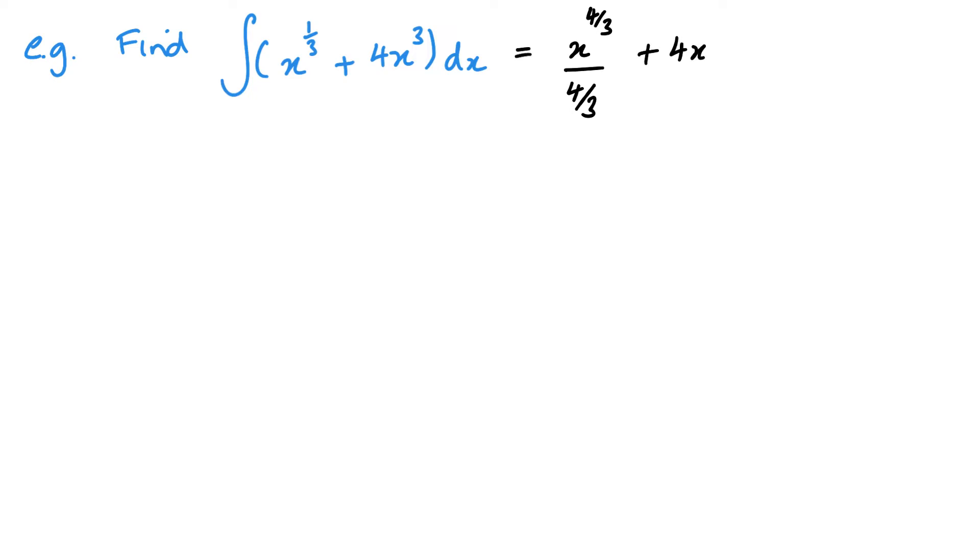And then my second term, I'm going to add one to the power. It's going to become a power of four. Then I'm going to divide by that power. Then I must remember my constant, so add c.